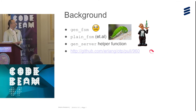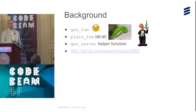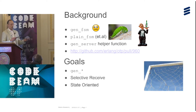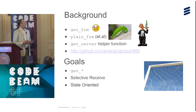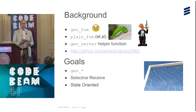Then I created a pull request with the first version for gen_statem, submitted it, and it got a fairly agitated discussion. There were lots of changes, but the outcome was really good. Among the goals: it should be a gen behavior, so you don't have to bother with parse transforms and you get handling of system messages automatically. It should have something like selective receive. It should have state-oriented callback code.